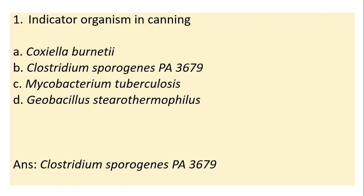Question 1: Indicator organism in canning. Options: Coxiella burnetii, Clostridium sporogenes PA3679, Mycobacterium tuberculosis, Geobacillus stearothermophilus. Answer is B, Clostridium sporogenes PA3679. Coxiella burnetii is the new indicator organism in pasteurization. Mycobacterium tuberculosis is the old indicator organism in pasteurization.